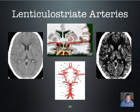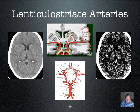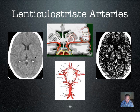Small branches come off the m1 segment of the middle cerebral artery that perfuse areas of the basal ganglia. Here on CT you can see a little lentiform structure, and there is a defect in it — an infarct of one of these small branches coming off the m1 segment of the middle cerebral artery.